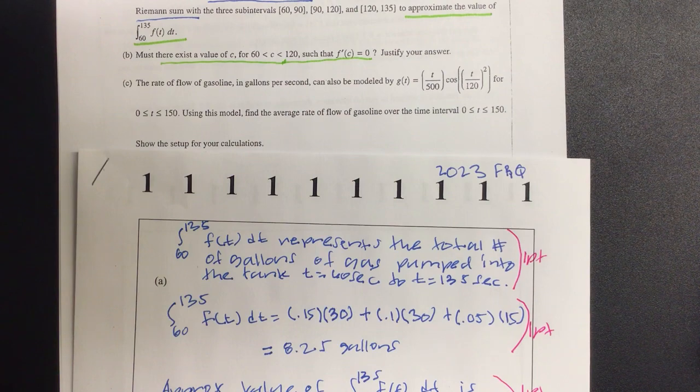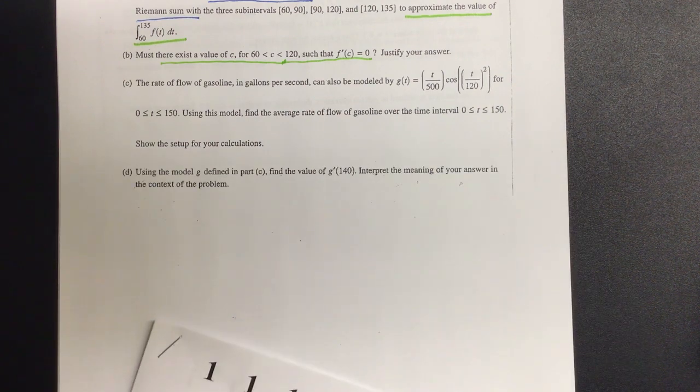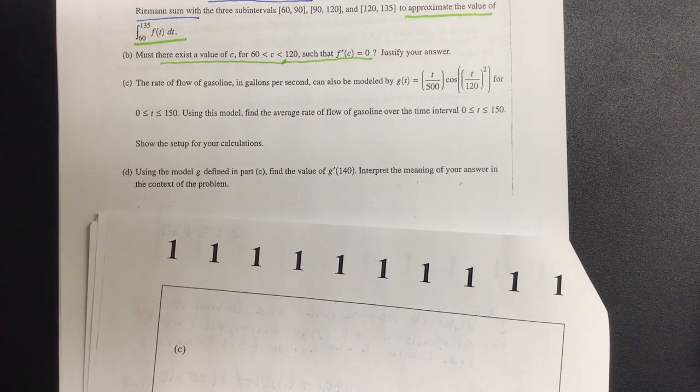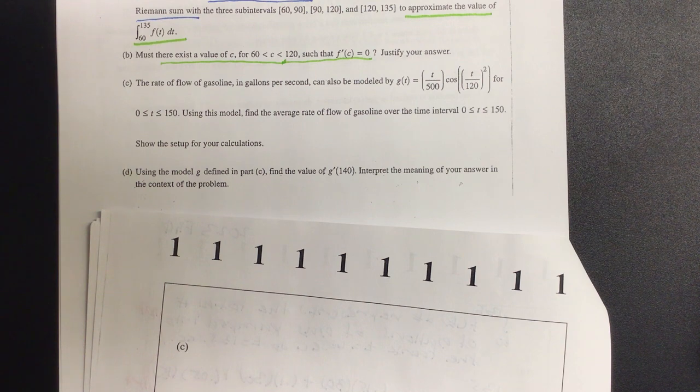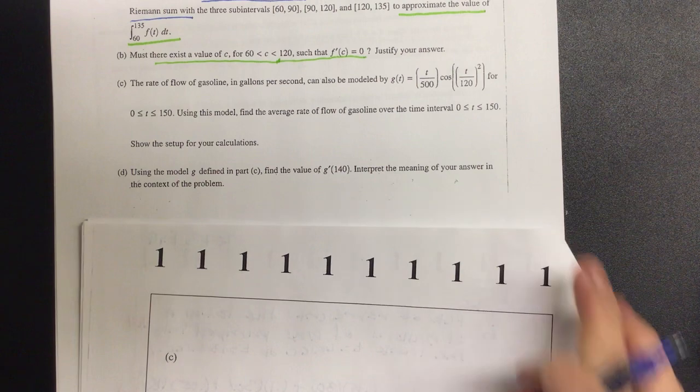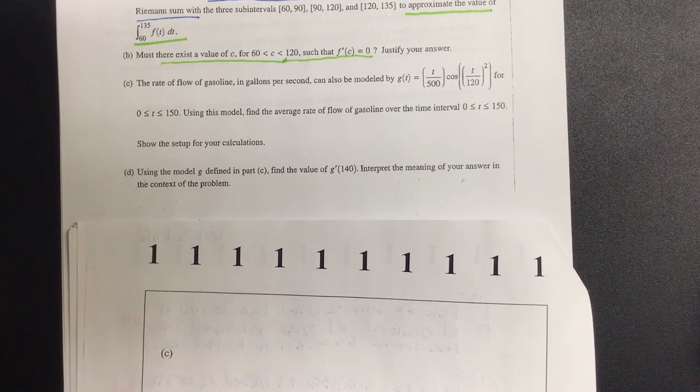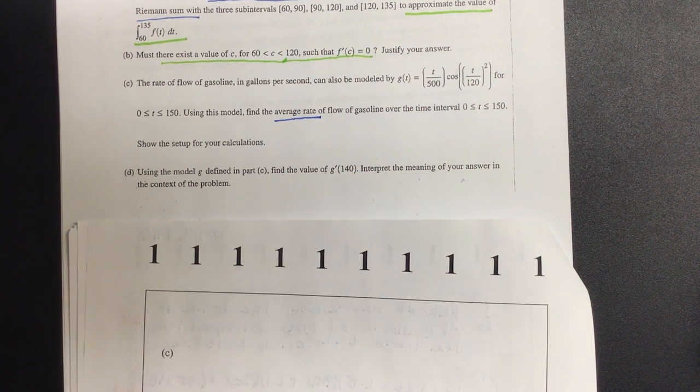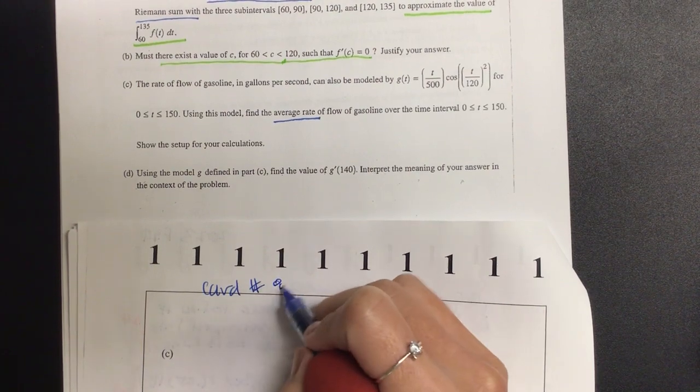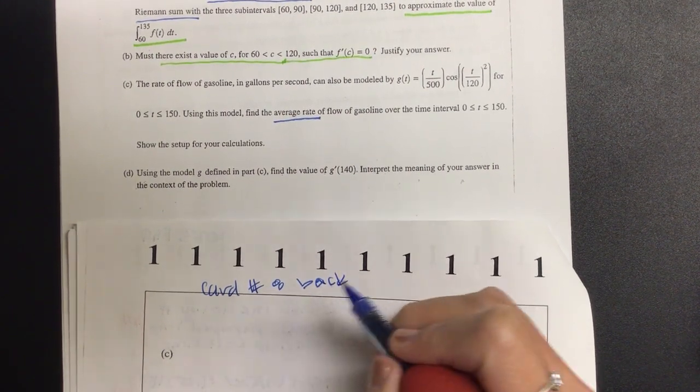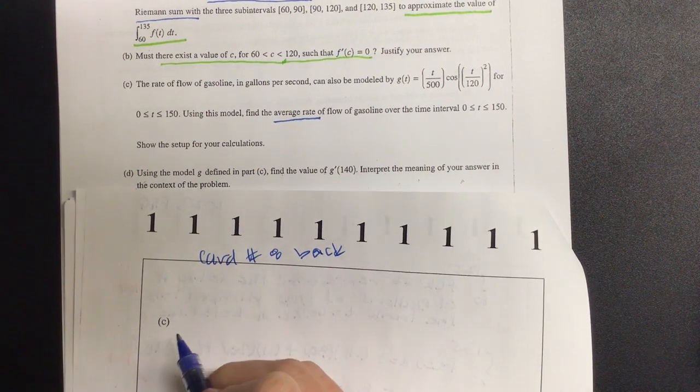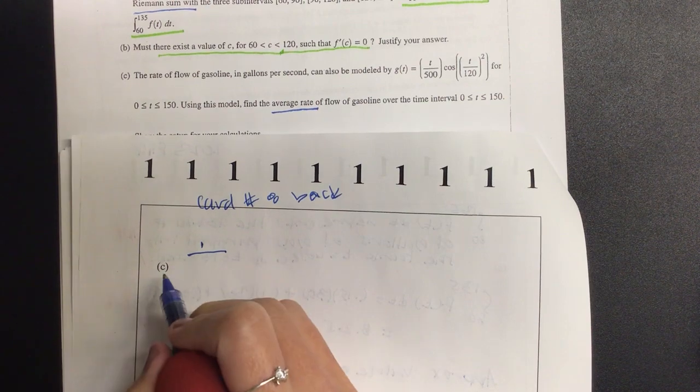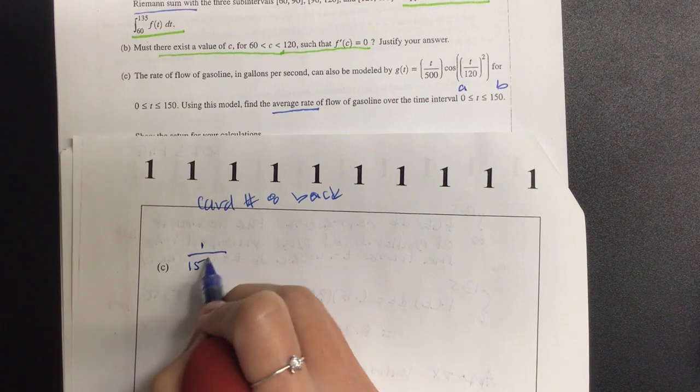Okay, let's go on to my part C. Red, go ahead and read part C. The rate of flow of gasoline in gallons per second can also be modeled by G of T is equal to T over 500 cosine of T over 120 squared. For zero is less than or equal to T, less than or equal to 150. Using the model to find the average rate of flow of gasoline over the time interval zero is less than or equal to T, less than or equal to 150. So this would be, show the setup for your calculations. All right, average rate of flow. This would be card number eight.